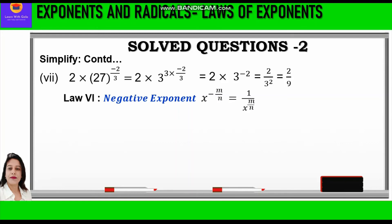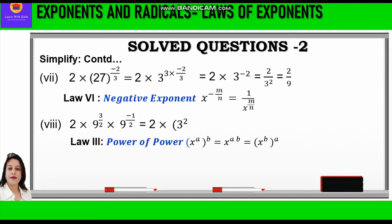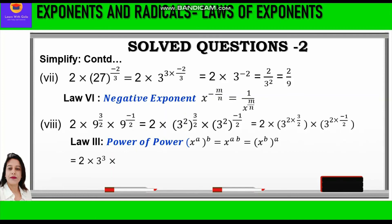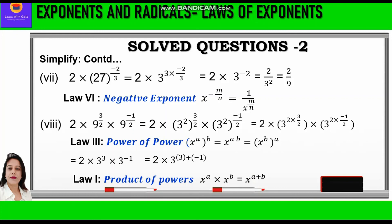Question 8: 2 into 9 raised to power 3 by 2 into 9 raised to power minus half. Since 9 is 3 square, we write 2 into 3 square whole raised to power 3 by 2, into 3 square whole raised to power minus half. Applying law 3, power of power, we multiply the powers: 2 and 2 cancel in both brackets, giving 2 into 3 cube into 3 raised to power minus 1. Applying law 1, product of powers, we add the powers: 2 into 3 raised to power 3 plus minus 1, equal to 2 into 3 square, equal to 2 into 9, equal to 18.